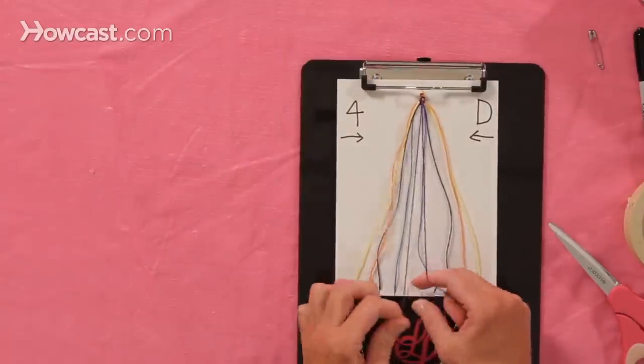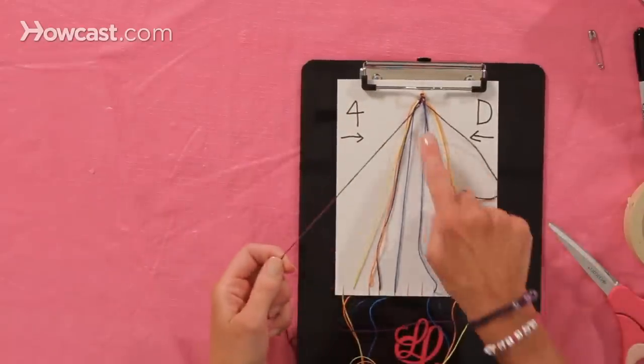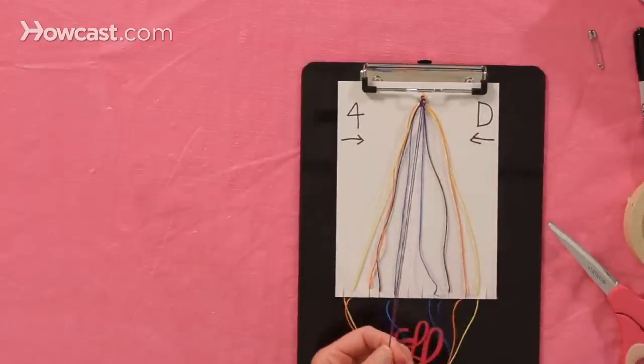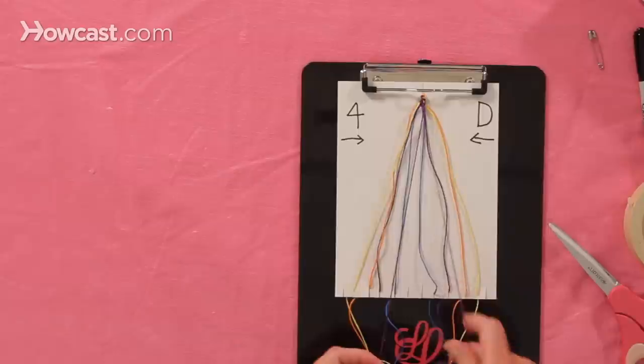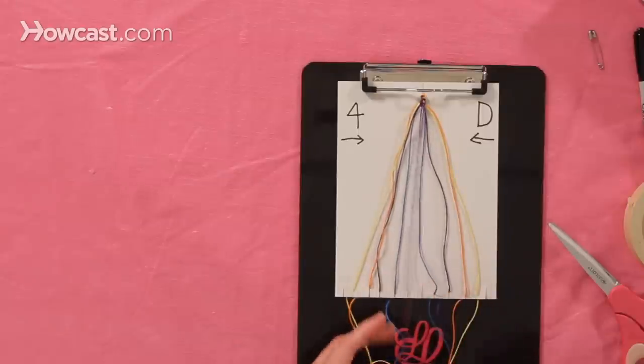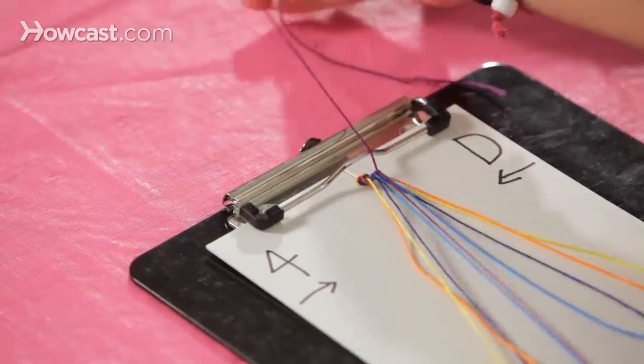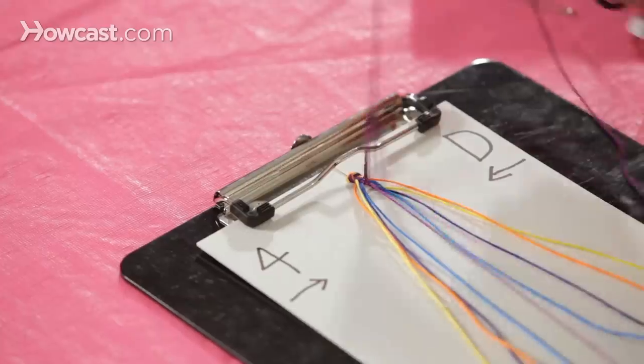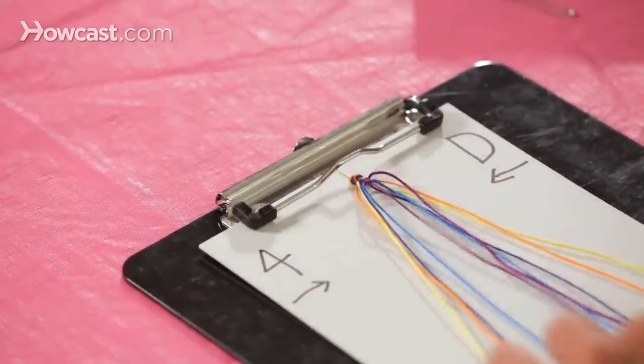Now you take these two purple strings, and you'll notice that the bracelet at the very top there is now separated. So you need to connect the bracelet with these two strings. You're going to do the forward knot, the number four, to tie them up together, two knots in the middle. That's one, and that's two, and you'll tuck them back in.